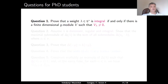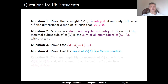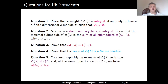A couple of questions for PhD students. Question 1: Prove that a weight is integral if and only if it belongs to the support of some finite-dimensional G-module. Question 2: Assume λ is dominant, regular, and integral; show that the maximal submodule of Δ(λ) is the sum of all submodules Δ(s_α · λ) where α is a simple root. Question 3: Prove that the Verma module corresponding to the weight −ρ is simple. Question 4: Prove that the socle of a Verma module is a Verma module. Question 5: Construct explicitly an example of a non-simple Verma module such that λ(H_α) is not a non-negative integer for any simple root α.